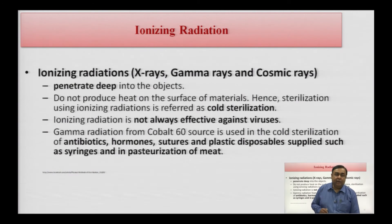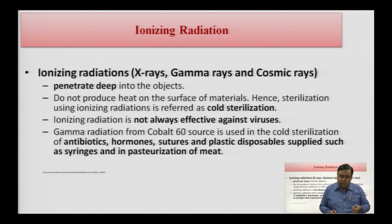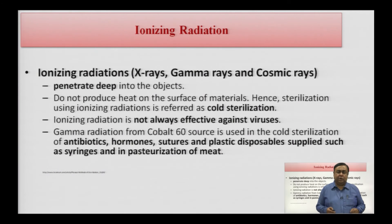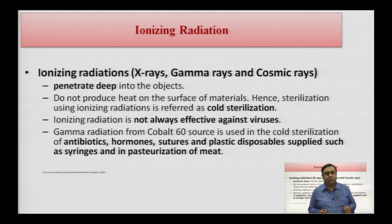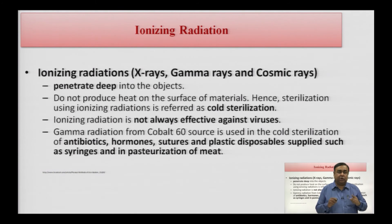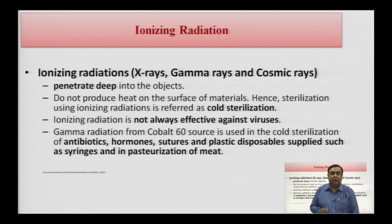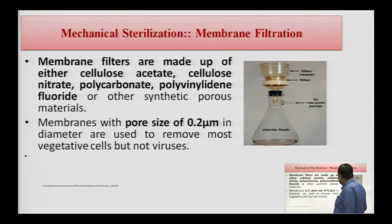Antibiotics, hormones, and sutures — sutures are the threads used to join two broken wounds after an operation, such as catgut — you must be very cautious when using such items. Antibiotics, hormones, sutures, and all plastic disposables like syringes are very effectively sterilized by the process of ionizing radiation.